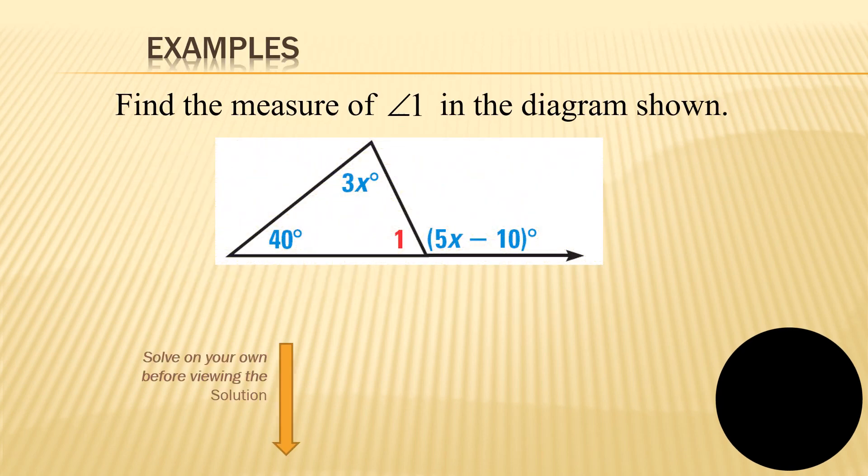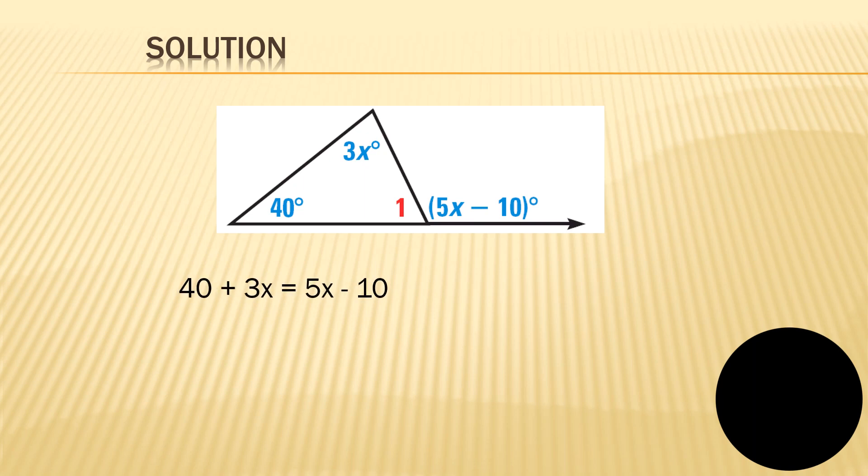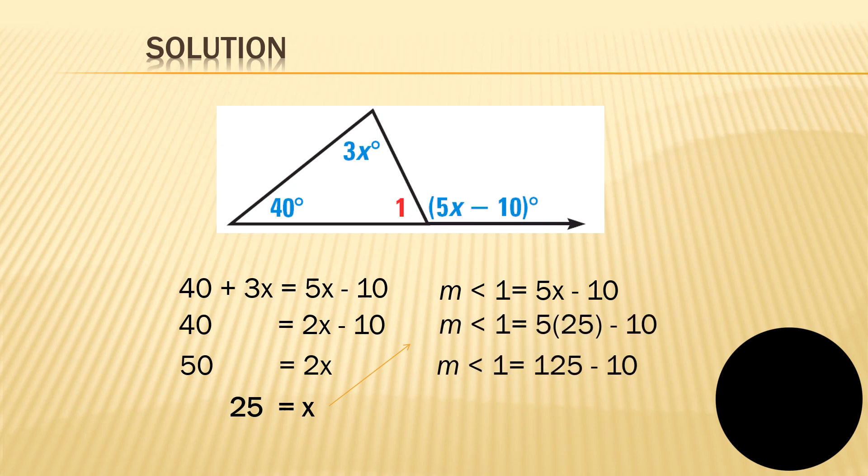The next example, find the measure of angle 1 in the diagram below. Of course, we could say that 5X minus 10 equals 40 plus 3X. So, here is the solution. We have 40 plus 3X equals 5X minus 10. Then, we can transpose that. We can say that 40 and then 5 minus 3 equals 2 minus 10. So, we got 2X equals 50 divided by 2. X equals 25. So, the measure of angle 1 is 5X minus 10. Therefore, 5 times 25 minus 10. So, we got 125 minus 10 or measure angle 1 equals 115.